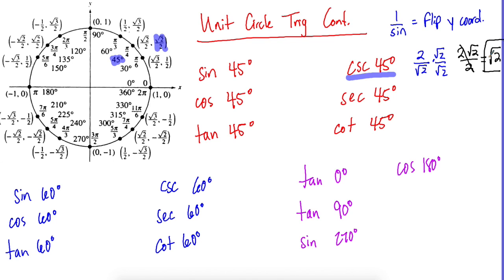Secant is cosine flipped, so we do the same thing — at 45 degrees you get the same coordinate since sine and cosine are equal there. Cotangent is tangent flipped, so you find tangent and flip it. The 60-degree angles work the same way.